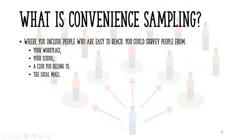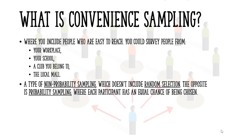Convenience sampling, also called accidental sampling or grab sampling, is where you include people who are easy to reach. For example, you could survey people from your workplace, school, a club you belong to, or the local mall.